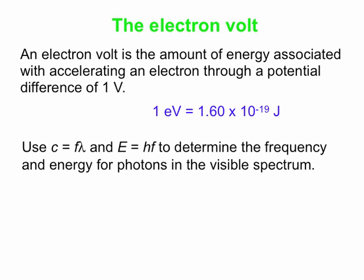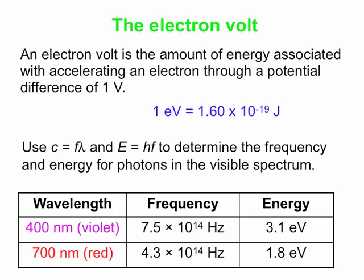Let's consider the visible spectrum. The visible spectrum runs from 400 nanometers to 700 nanometers. 400 is at the violet end of the spectrum; 700 nanometers is at the far red end. If you take the wavelength 400 nanometers for violet light and figure out the equivalent frequency, you could also write the energy equation as E = HC/λ, since F = C/λ.